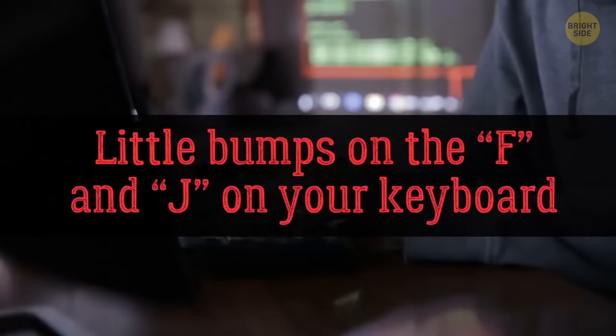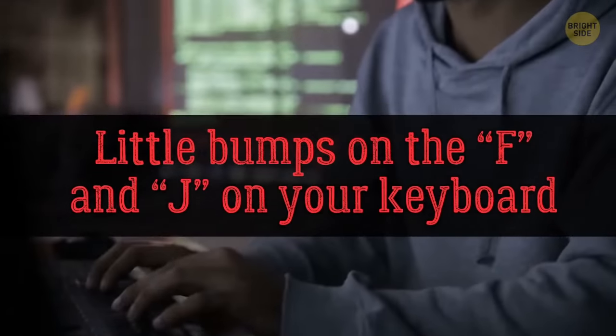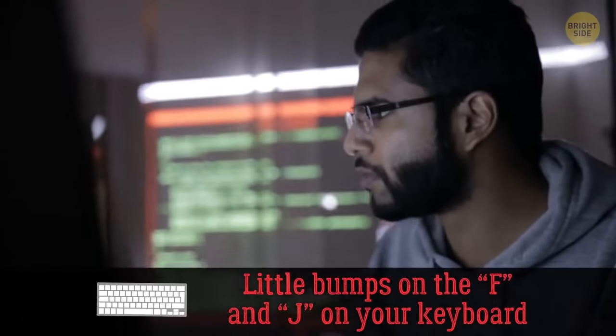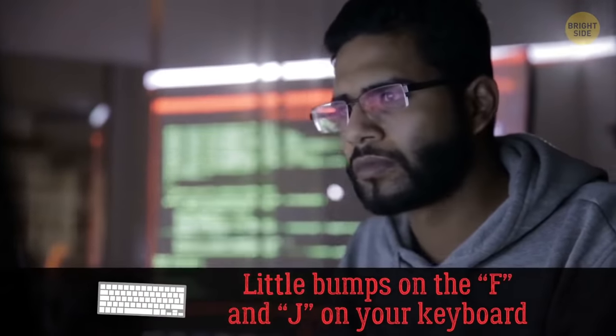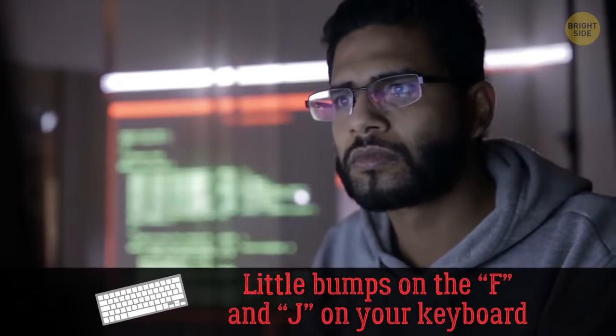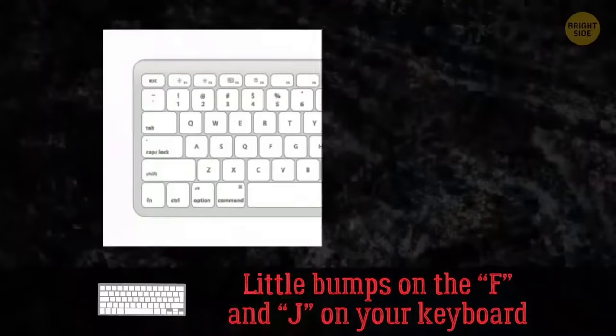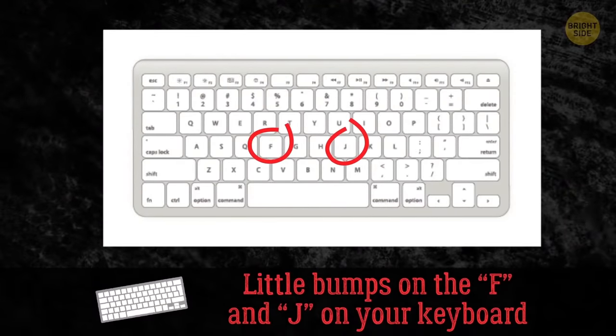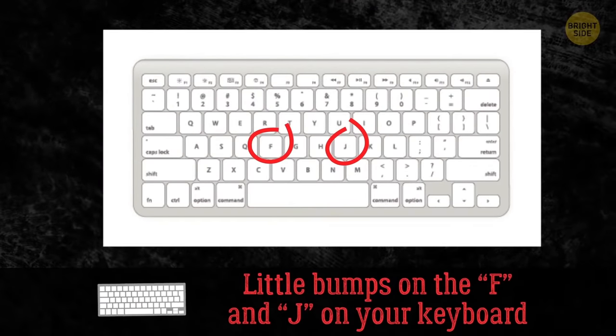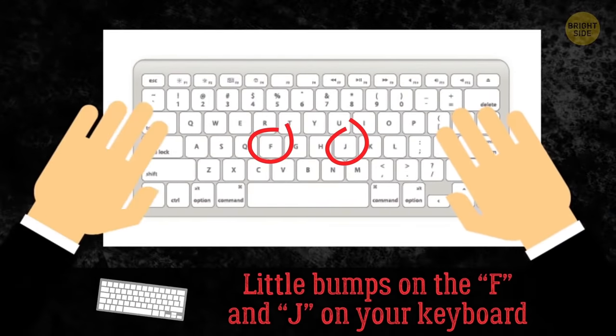This is done for those experienced typists that can do their work without even looking at the keyboard. The F and J are the so-called home keys where your index fingers rest. And the bumps are there to help find this position.